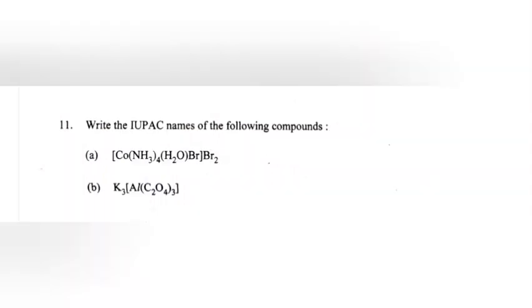Question 11: Write the IUPAC names of the following compounds. Answer: A. Tetraamine aquabromido-cobalt(III) bromide. B. Potassium trioxalatoaluminate(III).